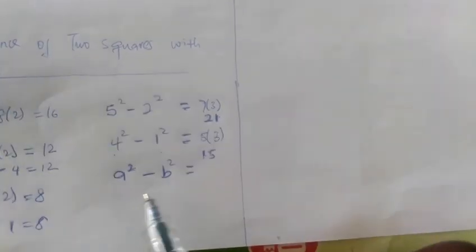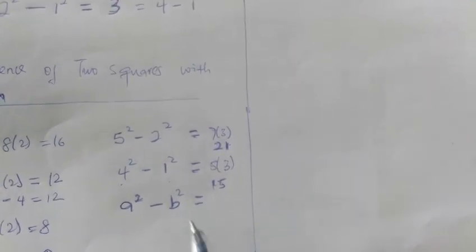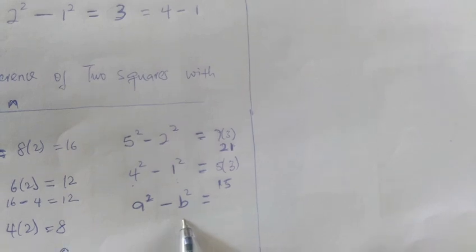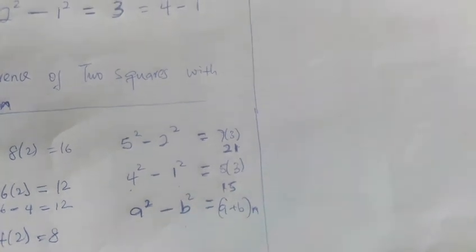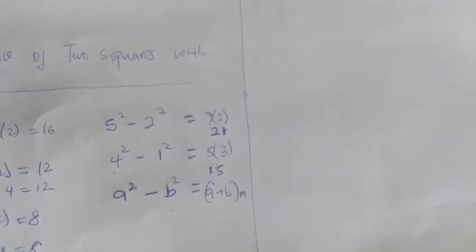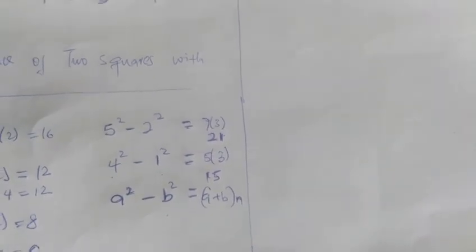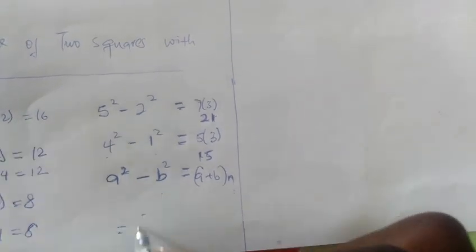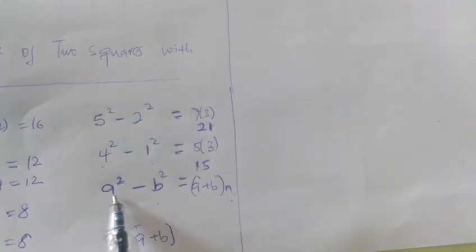Now I would like to do that of a squared minus b squared. In this case, it's by representing our difference as n. If our difference is n, it means a plus b, whatever we get, times n — that's our shortcut. So a plus b times n must give me my answer.